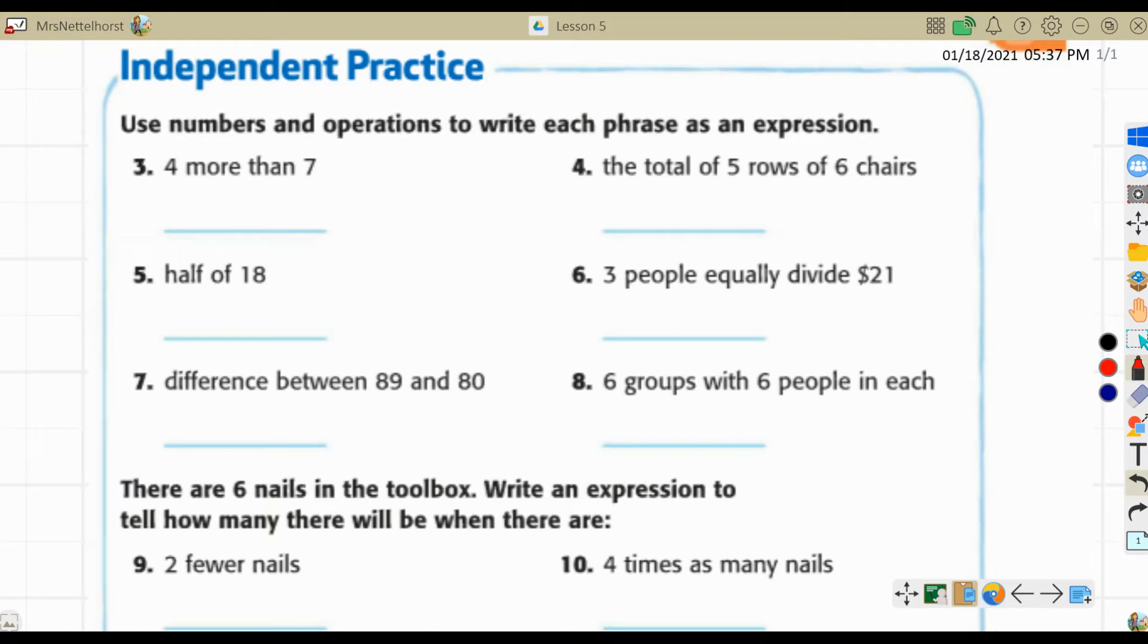More than we talked about on the other page, more than is the same as plus. A total of five rows of six chairs, and we know total can go with addition or multiplication, but if it's five rows of six, we are going to multiply. Half of 18. If you take something and you cut it in half, you have divided by two. Half means divide by two. Three people equally divide twenty-one. You're going to use your division symbol. The difference between eighty-nine and eighty, difference is the answer to a subtraction problem. And six groups with six people in each. When you see the words groups or rows, anything like that, and especially the word each, you know you are going to multiply. So there's some hints for those for you. Those of you that didn't bother to watch the video, you don't get all the hints.